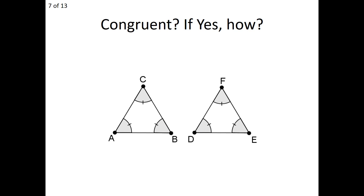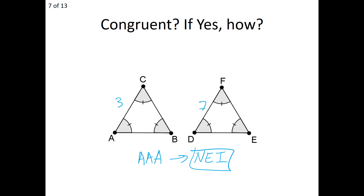How about ABC and DEF in this case? We have all three angles of the first equal to all three angles of the second, which means we're considering the angle-angle-angle case. Well, our answer then is no, or NEI. We simply do not know if these two are congruent — all three angles are equal, but that doesn't guarantee their sides are going to be the same length. We have to be extra careful: angle-angle-angle does not prove congruence.